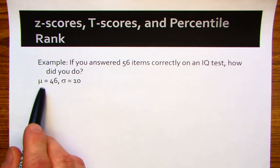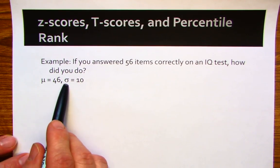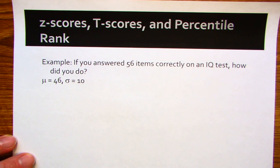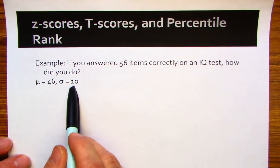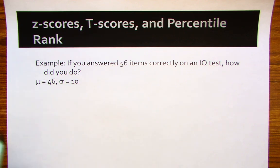We've got the population mean, μ, is 46. Population standard deviation, σ, is 10 for the number of items answered correctly on this particular IQ test.